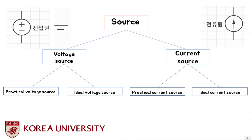It's me again. First, I want to talk about sources. A source gives energy to resistors, inductors, and capacitors. There are two kinds of sources: one is a voltage source, and the other is a current source.